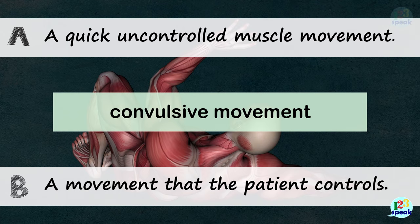Convulsive movement. A: A quick uncontrolled muscle movement. B: A movement that the patient controls. The correct answer is A — 'A quick uncontrolled muscle movement.'